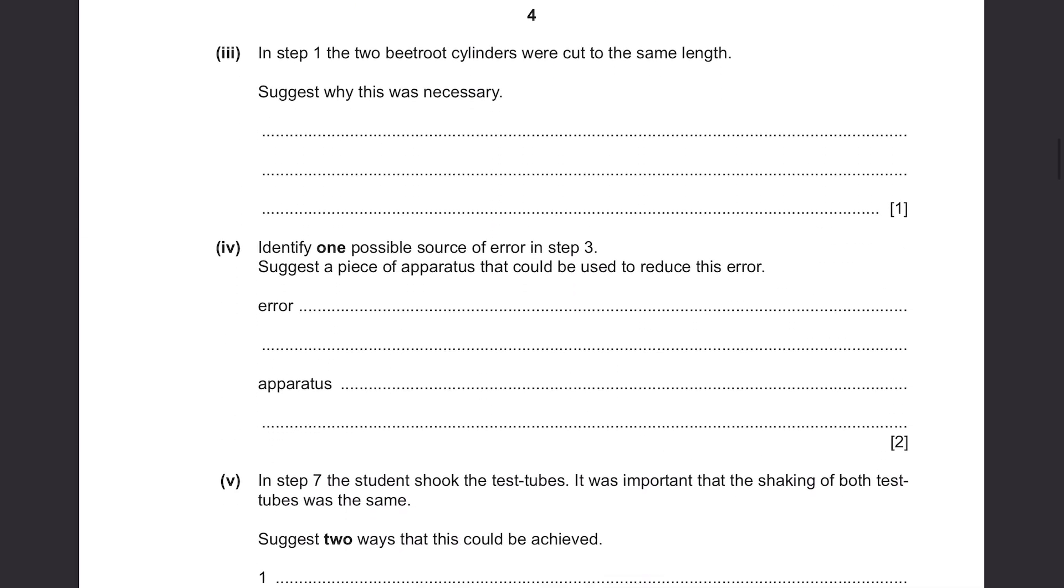In step 1, the two beetroot cylinders were cut to the same length. Suggest why this was necessary. So they were cut to 3 cm. This is important because you need to make sure that the surface area that is exposed to water is the same. If there is a bigger surface area for the pigments and the water molecules to move about, then there will be faster rate of diffusion. So you need to make sure that they all have the same surface area.